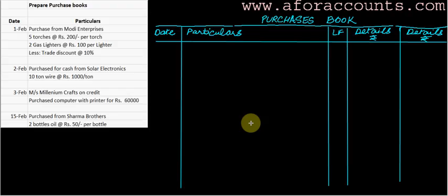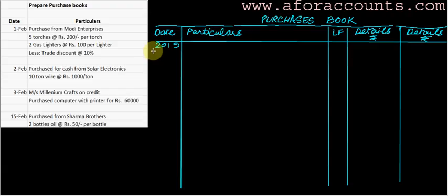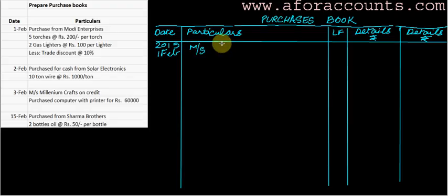Let's start with preparing our first purchase book, a subsidiary book. The year is 2015, so write 2015 at the top so you don't have to write it again and again. First, on 1st February, the transaction is: purchased from Modi Enterprises five torches at the rate of 200 per torch and two gas lighters at the rate of 100 per lighter, less trade discount at 10%. We write the name of the supplier — MS Modi Enterprises — on top.